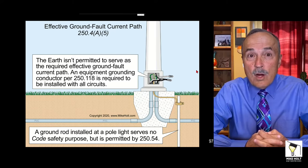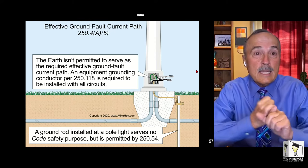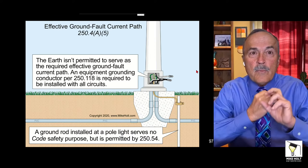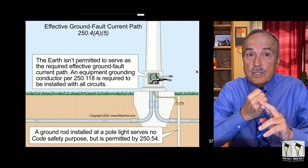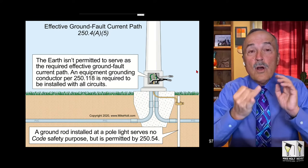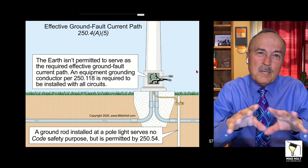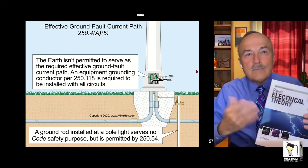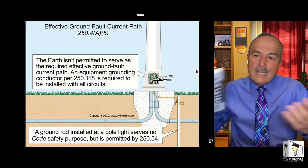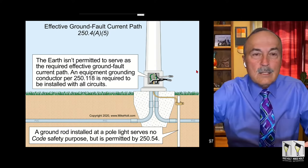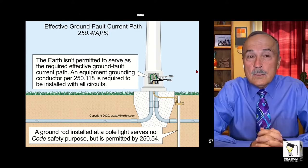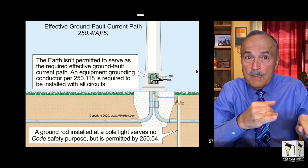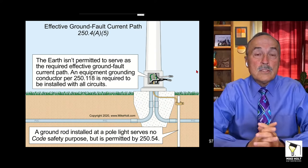I equals E over R. E is electromotive force - we use the word voltage to measure that. I equals E (the voltage) over R (the resistance), or really the impedance in AC circuits. So if you have a low impedance effective ground fault current path, what happens? You trip the breaker.